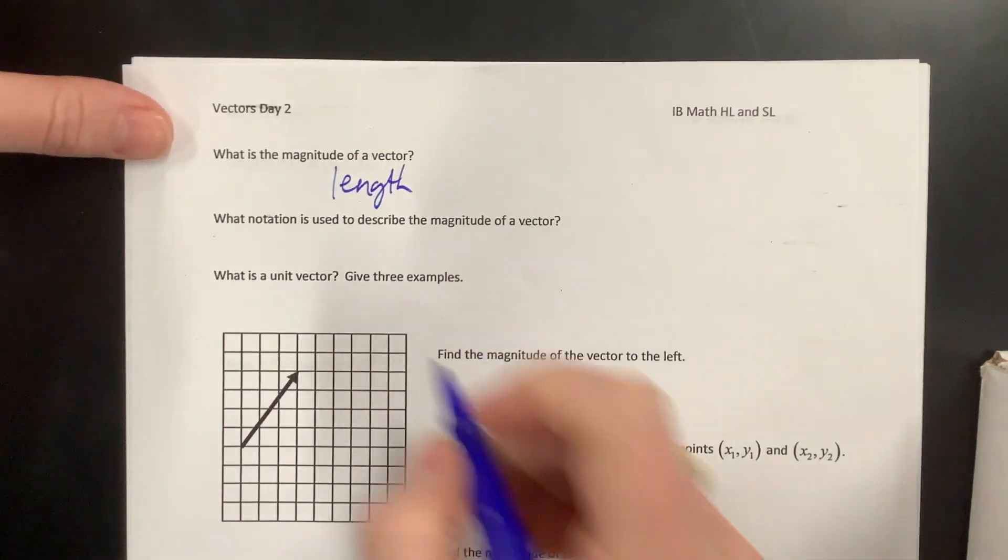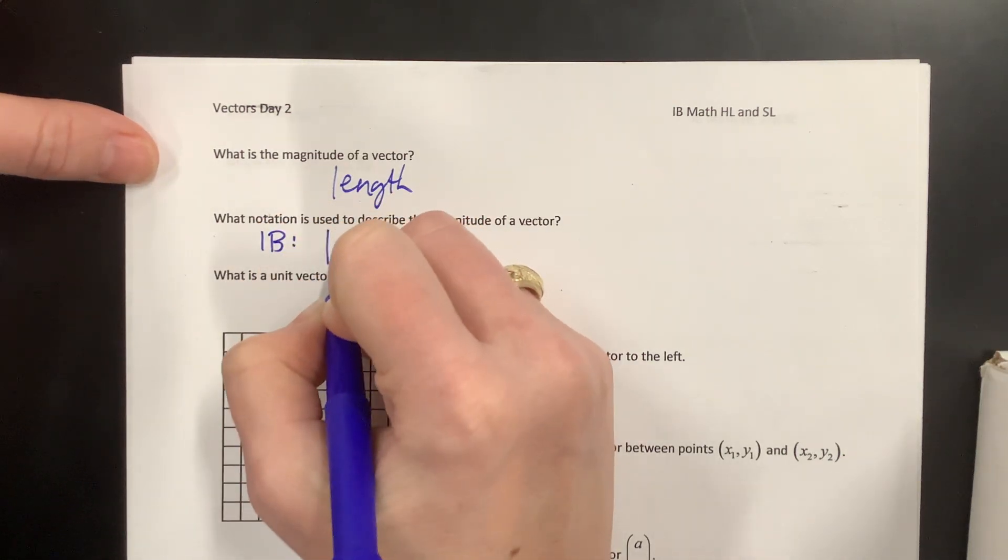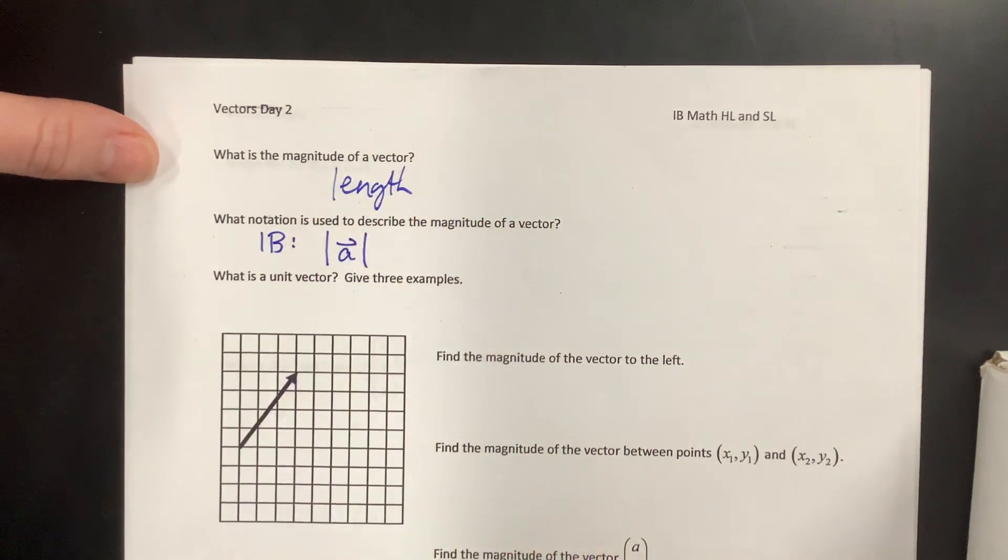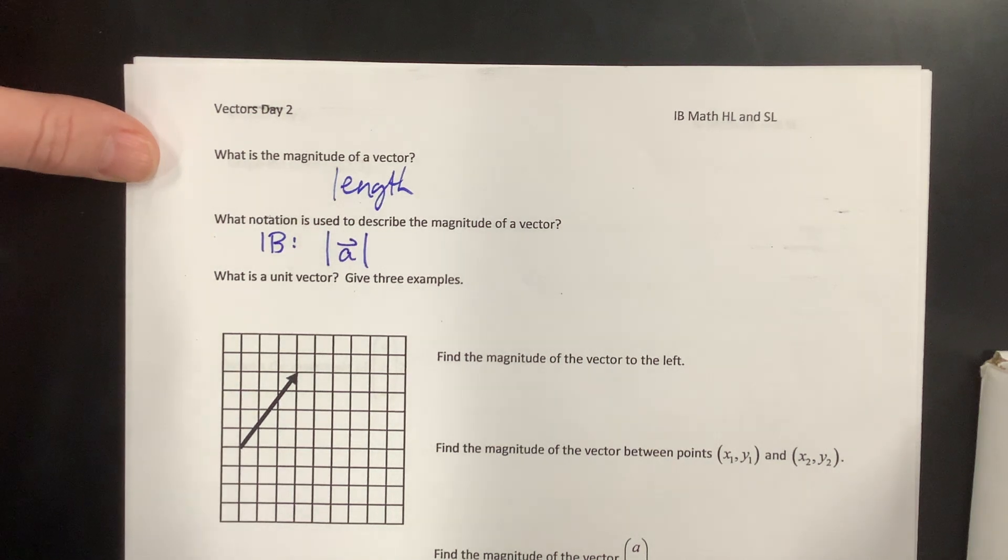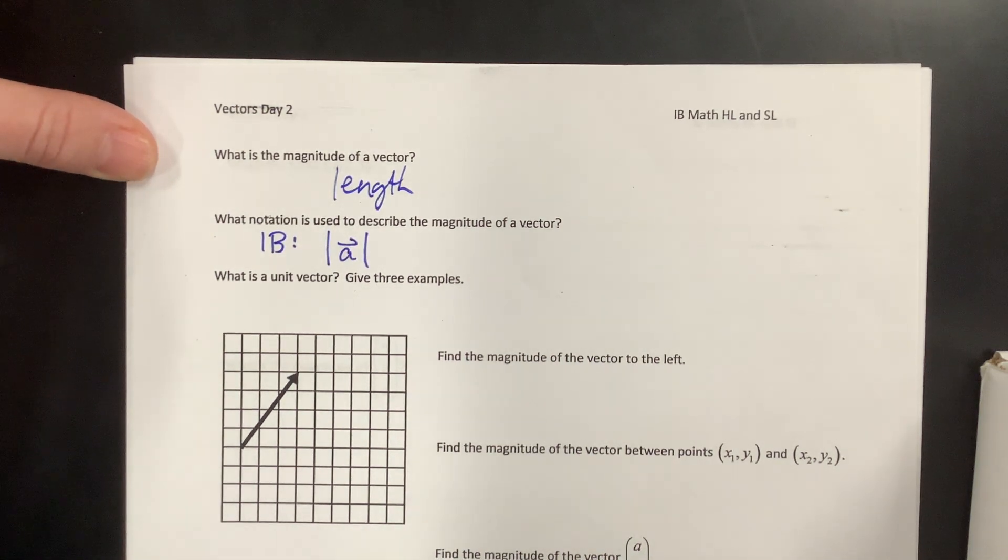The notation is used to describe it. In IB, we're lazy, and we'll just draw those little bars like that. They look kind of like absolute value bars, except in IB we call that the modulus.